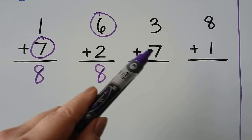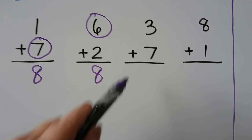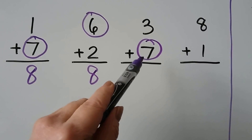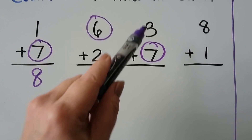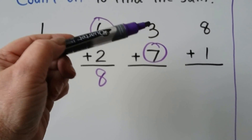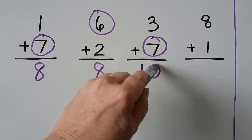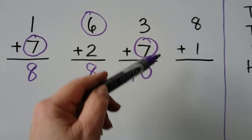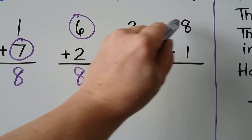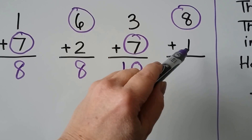3 plus 7 — 7 is the greater addend. We start with the 7 and count on 3: 7, 8, 9, 10. 8 plus 1 — 8 is the greater addend: 8, 9.